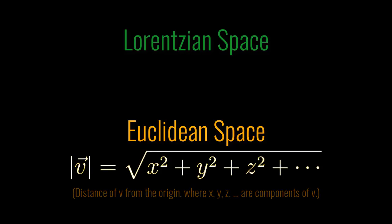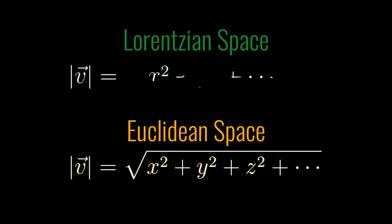If you do special relativity then you use a special Minkowski metric where you take x squared plus y squared plus z squared minus t squared and you notice that there's this funny minus sign here which makes everything very strange.